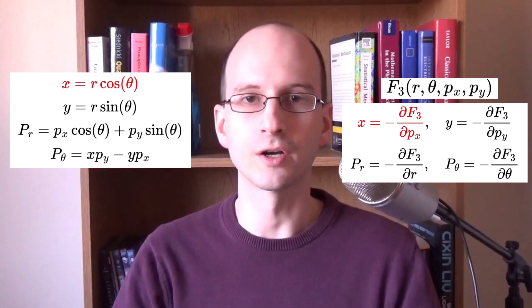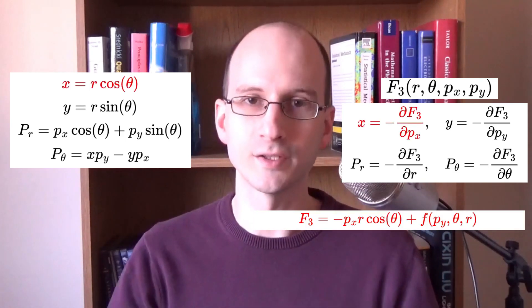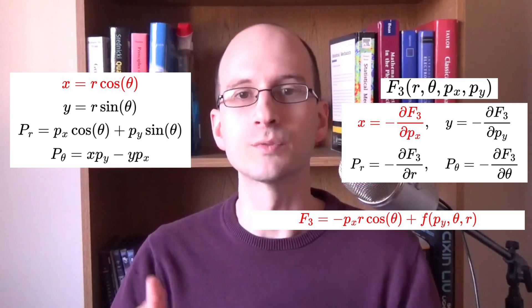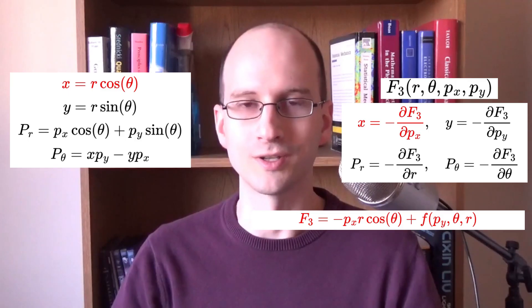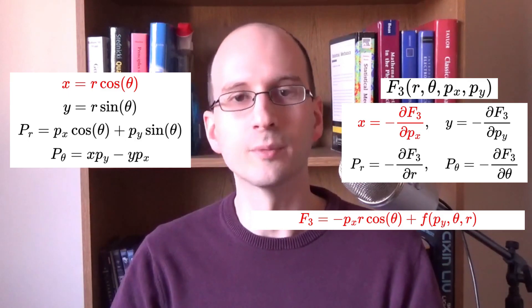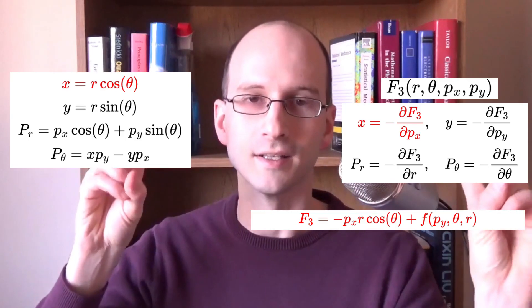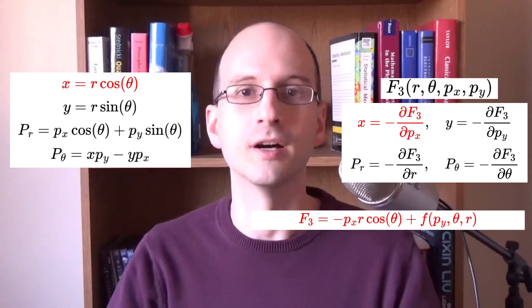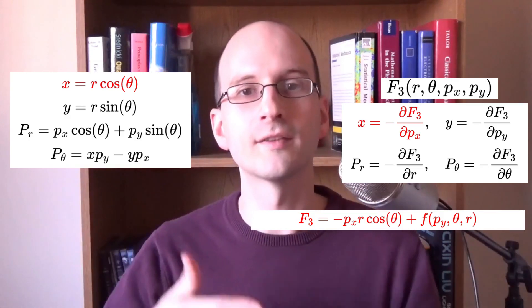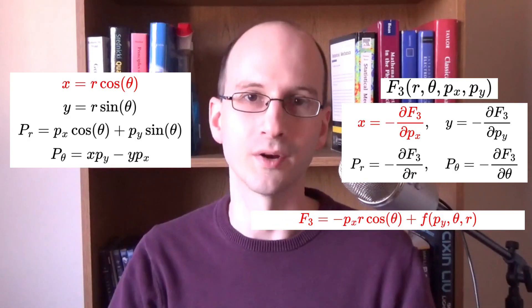X is R cosine theta. We take the antiderivative, or indefinite integral, and get F3 equals minus PxR cosine theta, plus a constant. And because F3 is a multivariable function, the constant is actually a function of the other three variables. To find that constant, we have to do the other integrals and compare the answers.